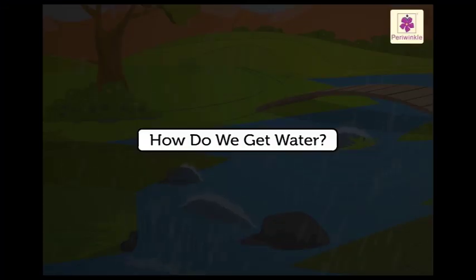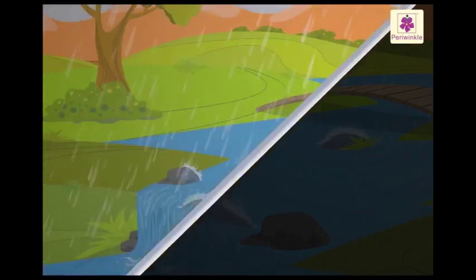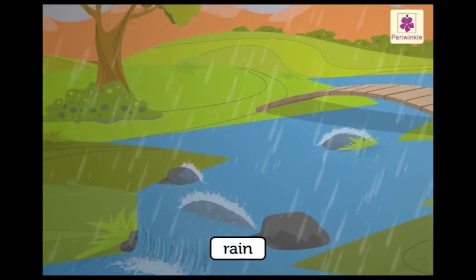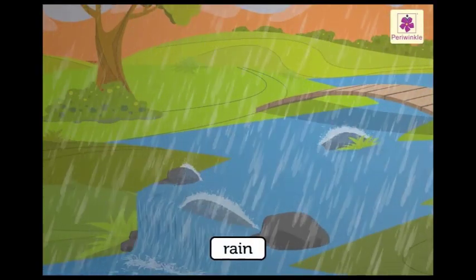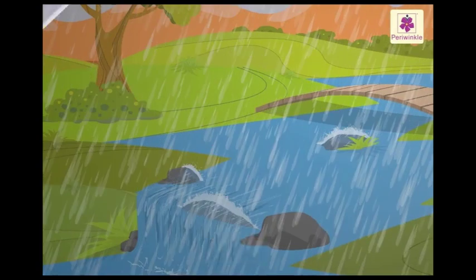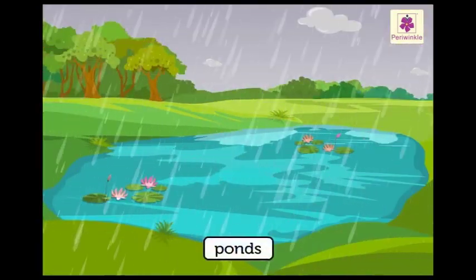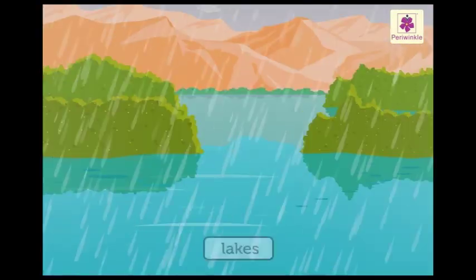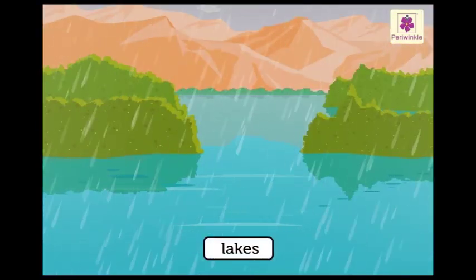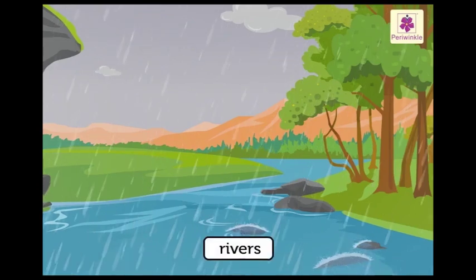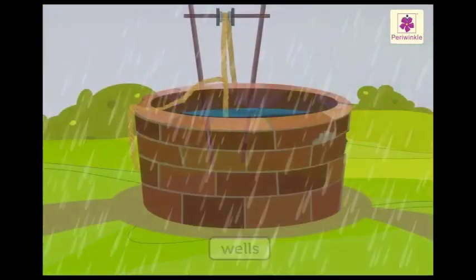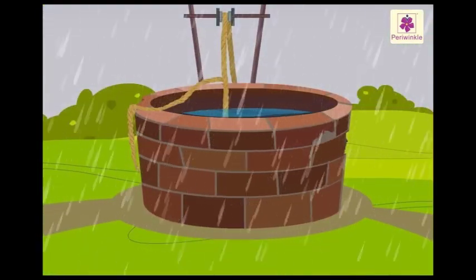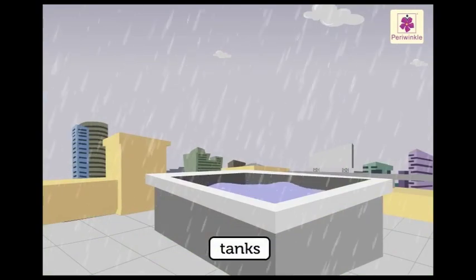How do we get water? We get water from rain. Rainwater gets collected in ponds, lakes, rivers, wells, and tanks.